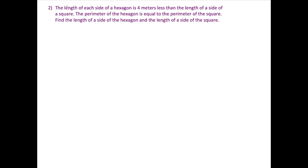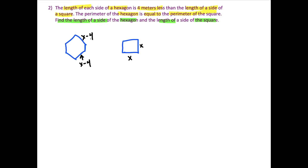For this next question, the length of each side of a hexagon is 4 meters less than the length of each side of a square. We're told that the perimeter of the hexagon equals the perimeter of the square, and we need to find the side length of each shape. Drawing it out: a hexagon has six sides and a square has four. If all sides of the square are x, then each side of the hexagon is x minus 4.